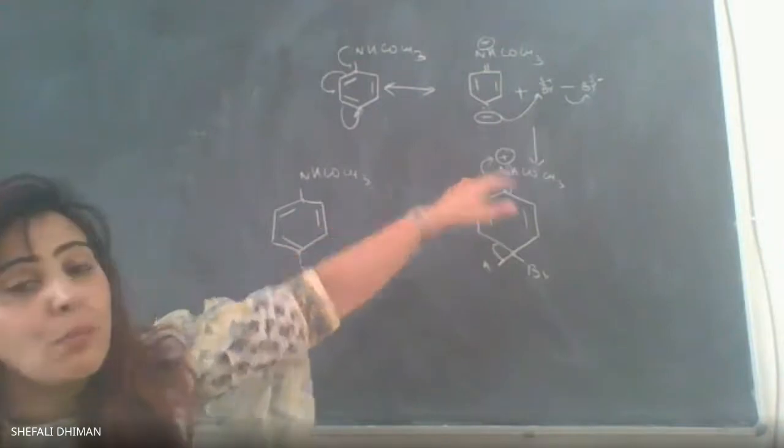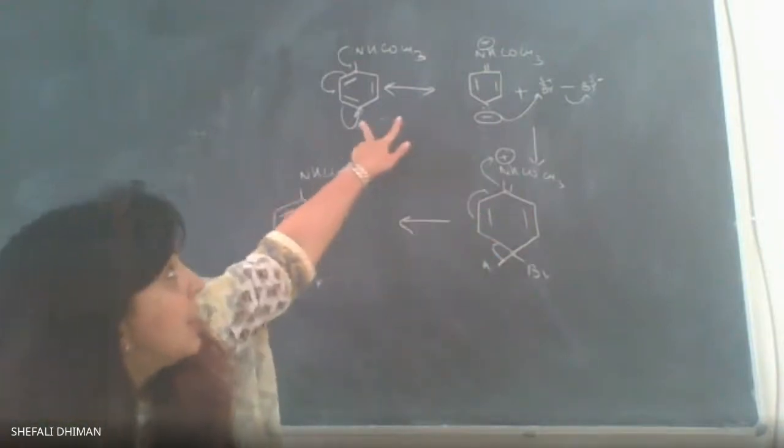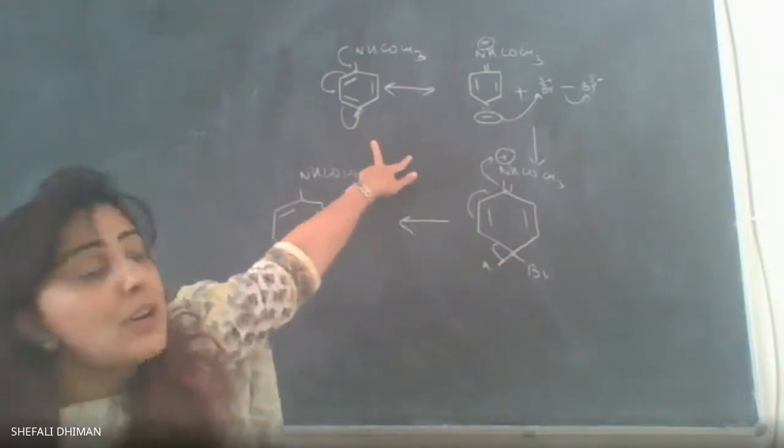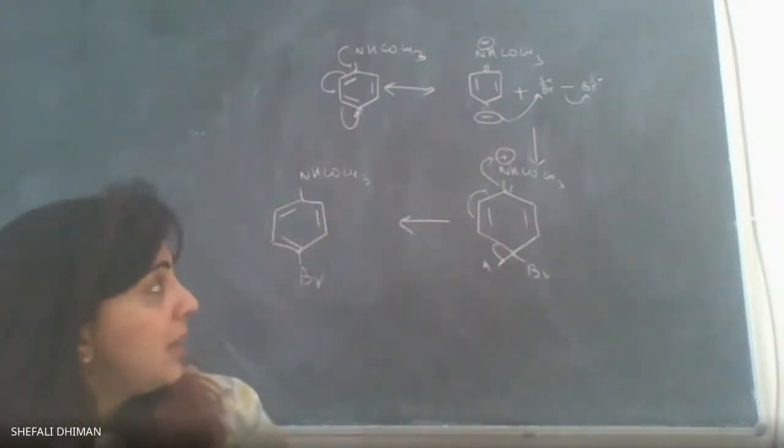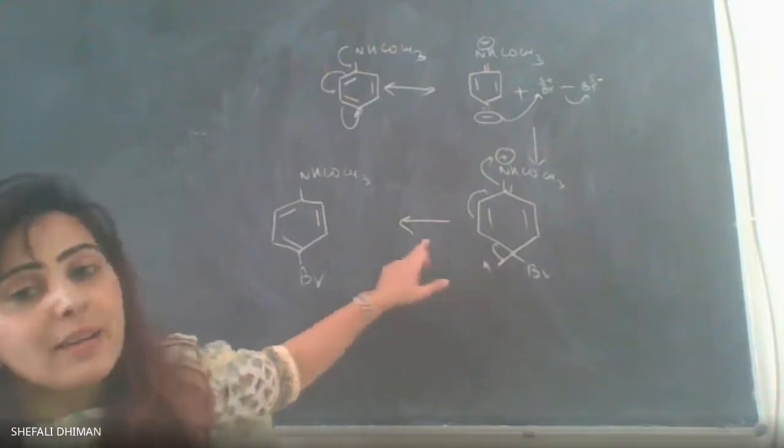When I'm going to react it with bromine now, you can see that this is a resonance hybrid of these two structures. When it's going to react with the bromine, you will find the para substituted product being formed as a major product.